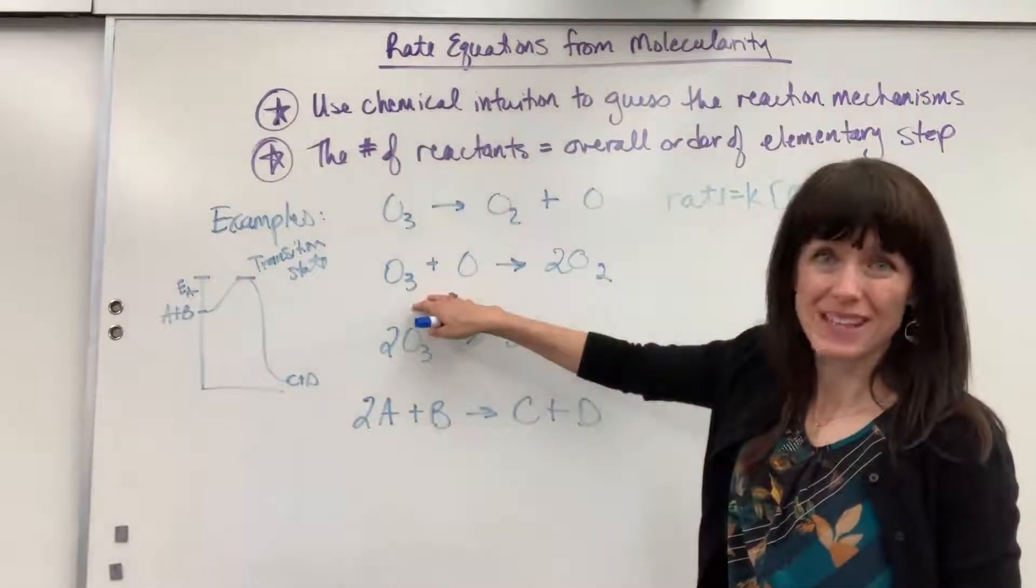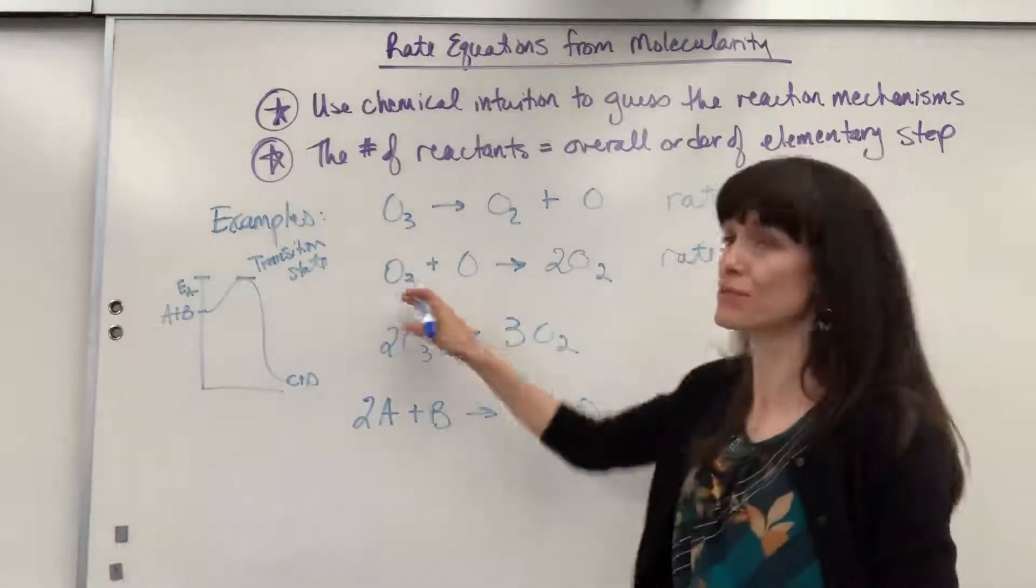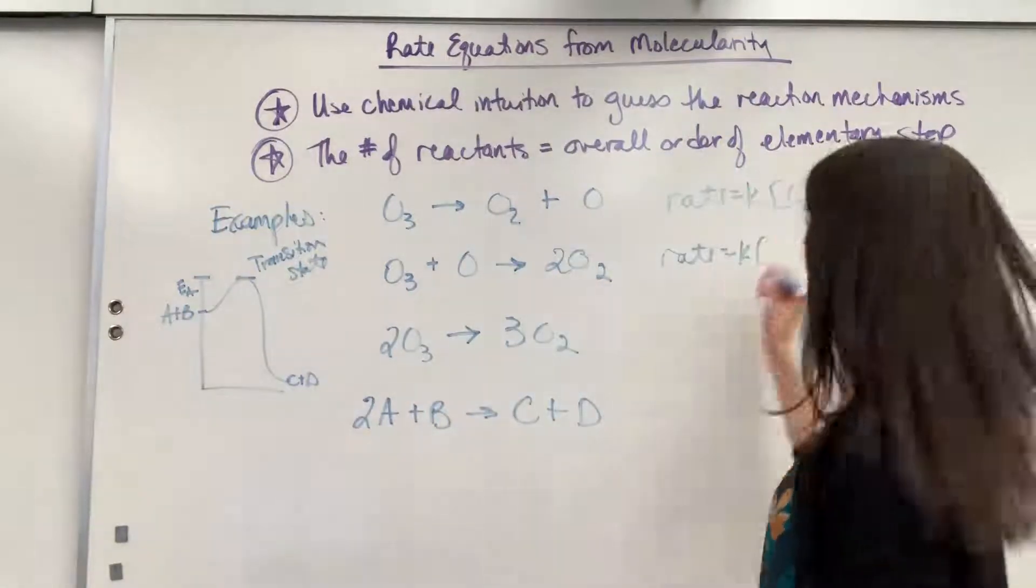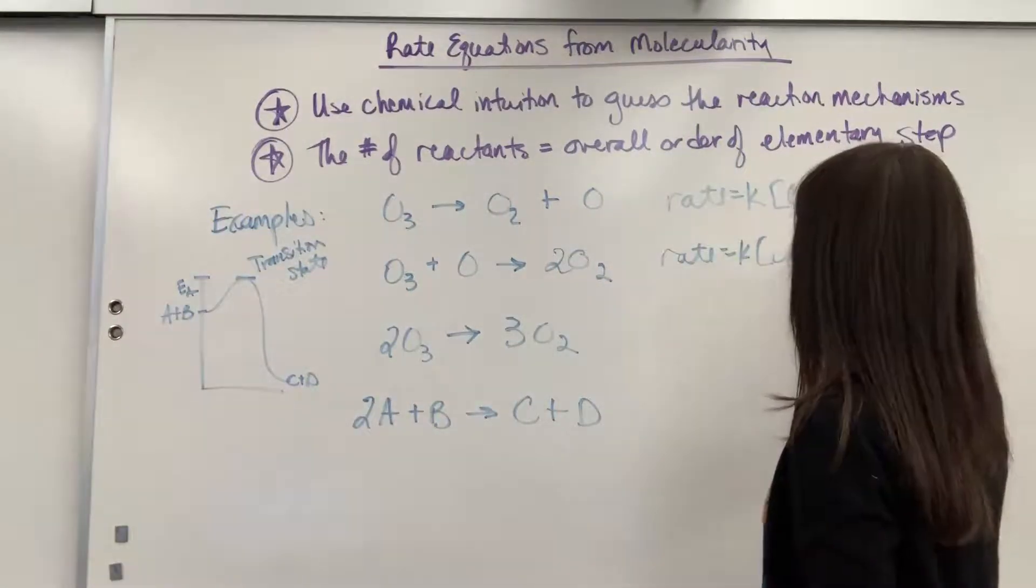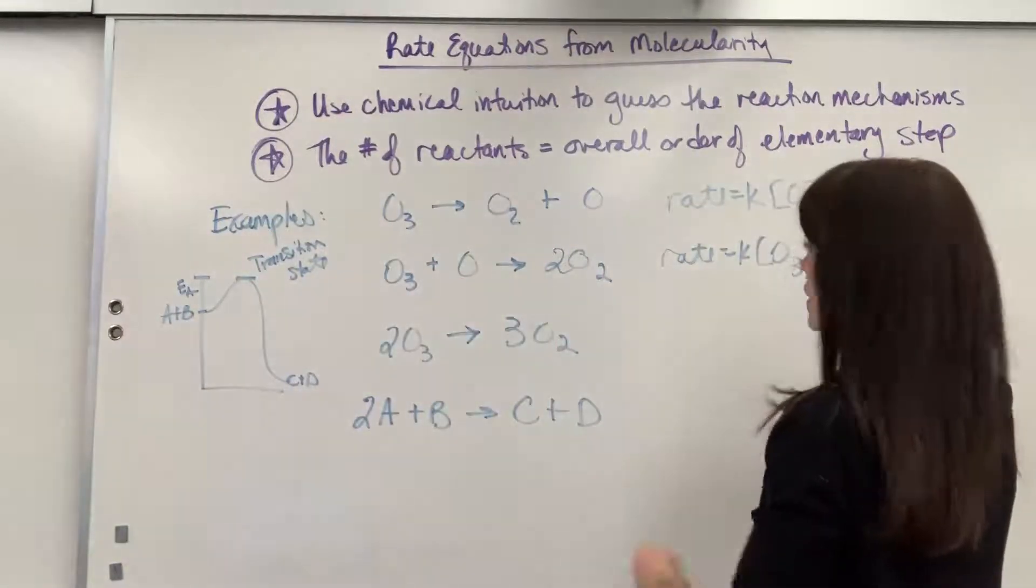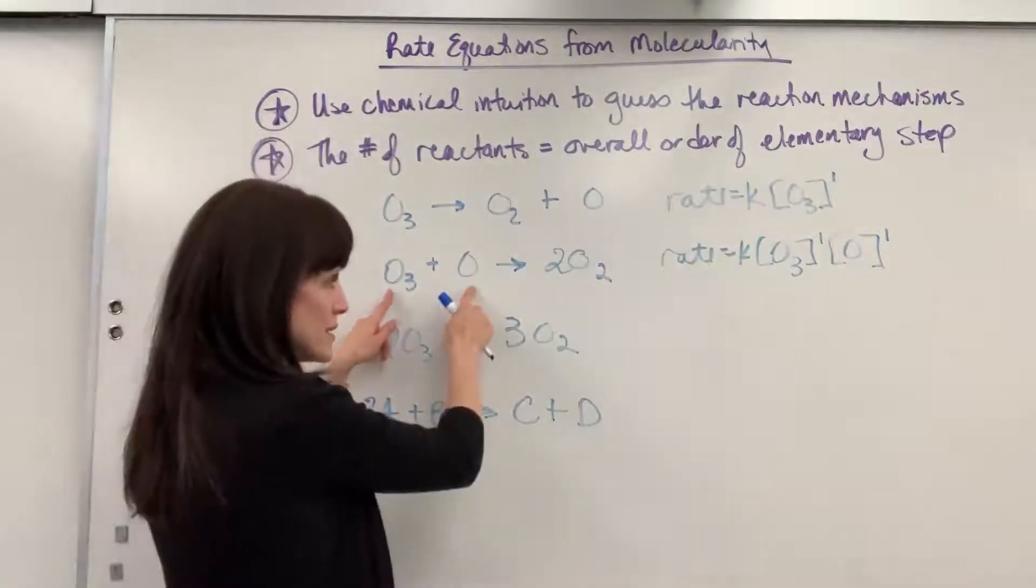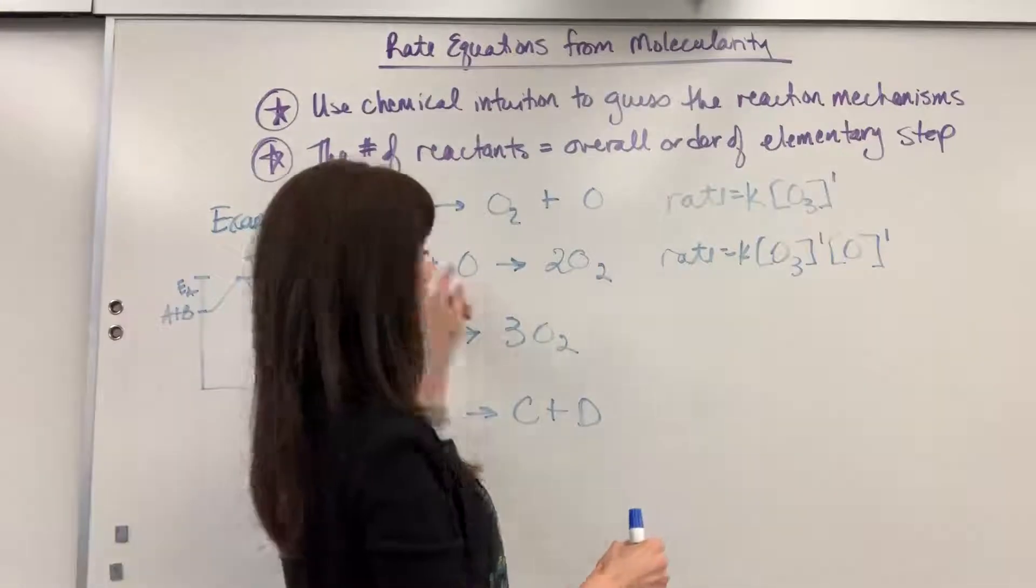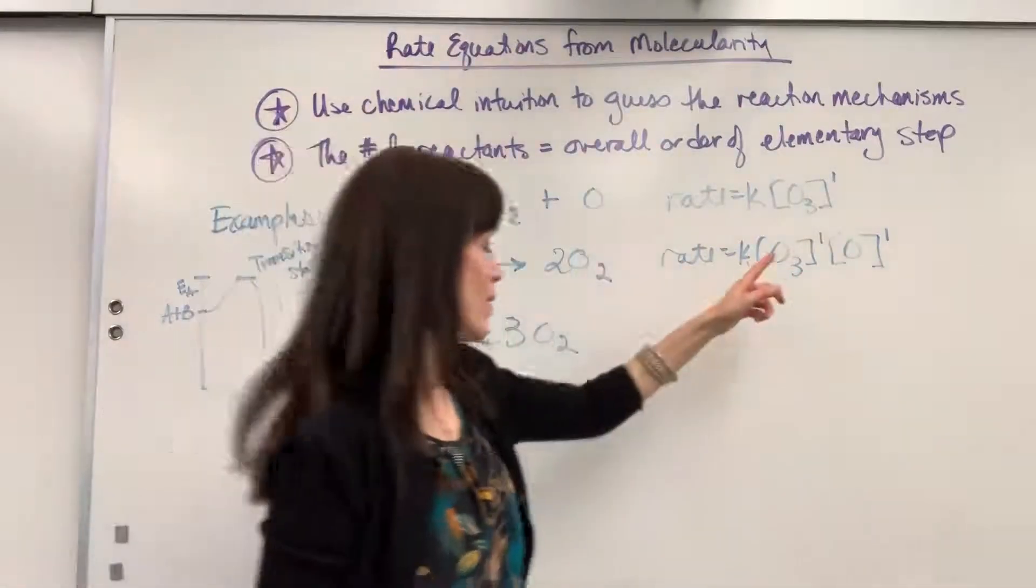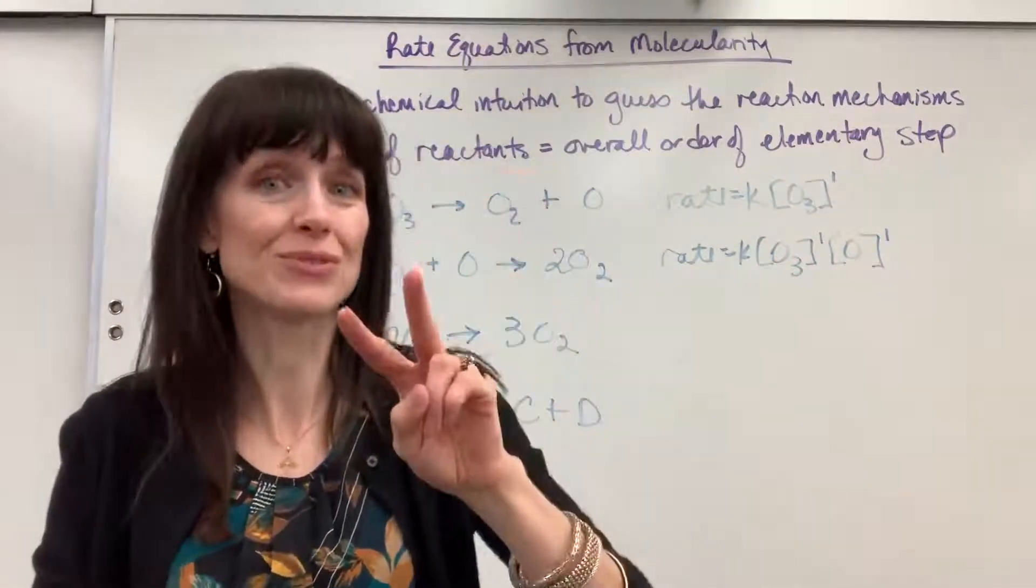Let's write the rate law for this elementary step. We've got rate equals K. And then again, I just write down the reactants, and the coefficient becomes the exponent, the order. So we have ozone, O3, to the first order, because that's understood to be a 1, times oxygen. And that is also a 1. So notice this. I've got two reactants. They each have an exponent of 1. So those are the orders, 1 and 1. The overall rate order, 1 plus 1, is 2. It's second order because I've got two reactants.